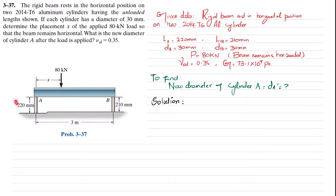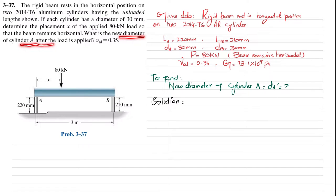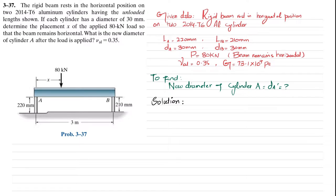The length of cylinder A is 220 millimeters and the length of cylinder B is 210 millimeters. The total length of the beam is 3 meters. We have to find the placement of this load over a distance x, and the new diameter of cylinder A after the load is applied. The given data: rigid beam rests horizontally on aluminum cylinders, diameter of each cylinder is 30 millimeters, load is 80 kilonewtons, and ν = 0.35.